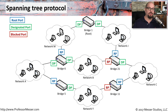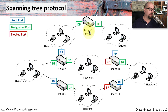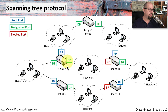Spanning Tree is also smart enough to watch what's happening on the network and reconfigure itself if there are any changes. For example, if network Y wants to communicate up to bridge one, it communicates through bridge five, through network A, through bridge six, network M, and then finally to bridge one.